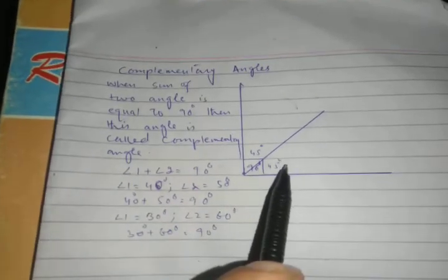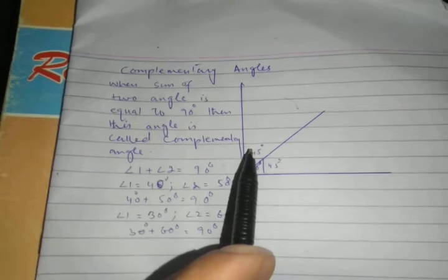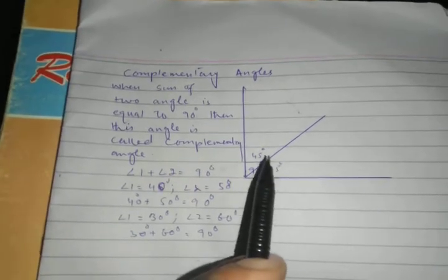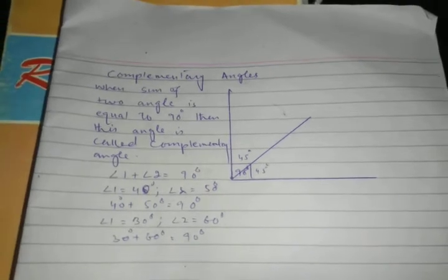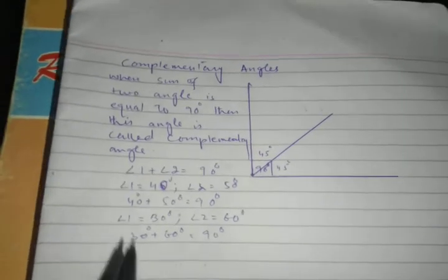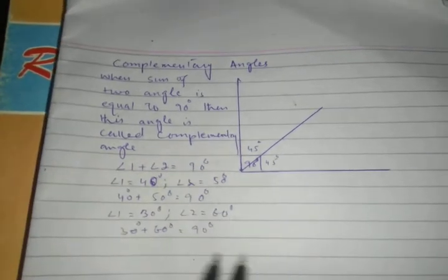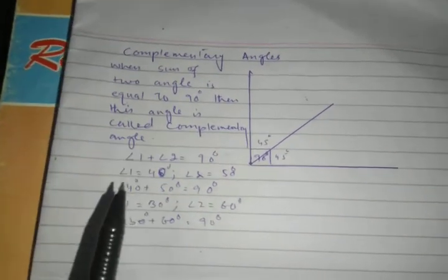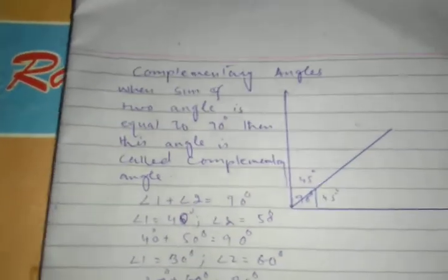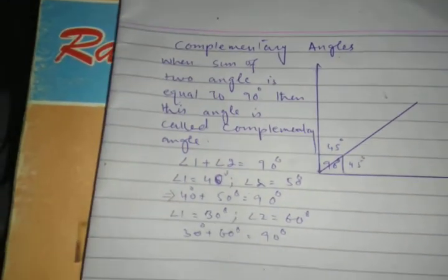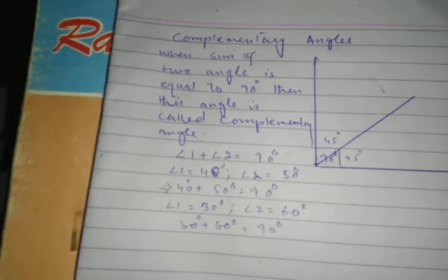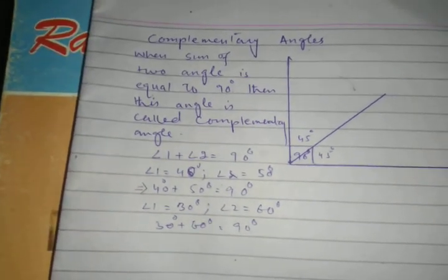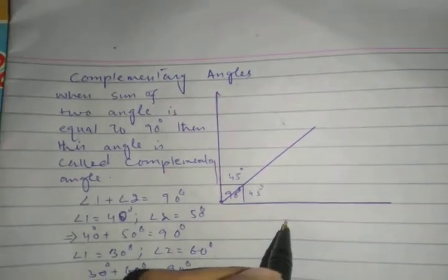For example, angle one is equal to 45 degrees and angle two is equal to 45 degrees. When angle one and angle two are added together and the result is 90 degrees, this is called a complementary angle. Another example: angle one is equal to 40 degrees and angle two is equal to 50 degrees. 40 degrees plus 50 degrees equals 90 degrees, so these are complementary angles.